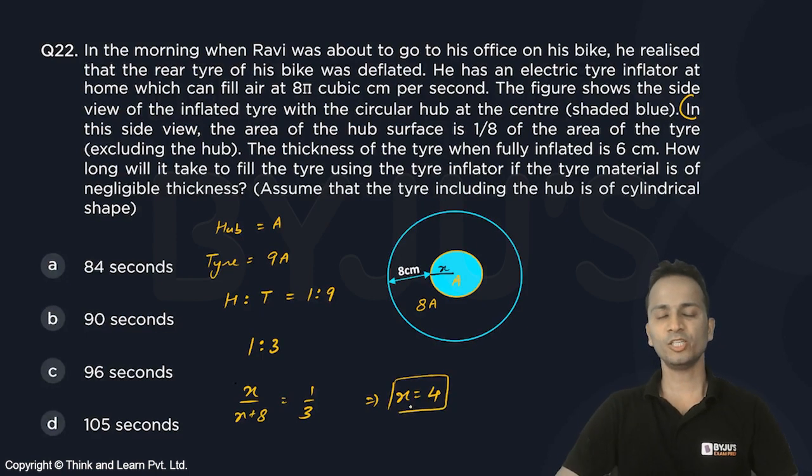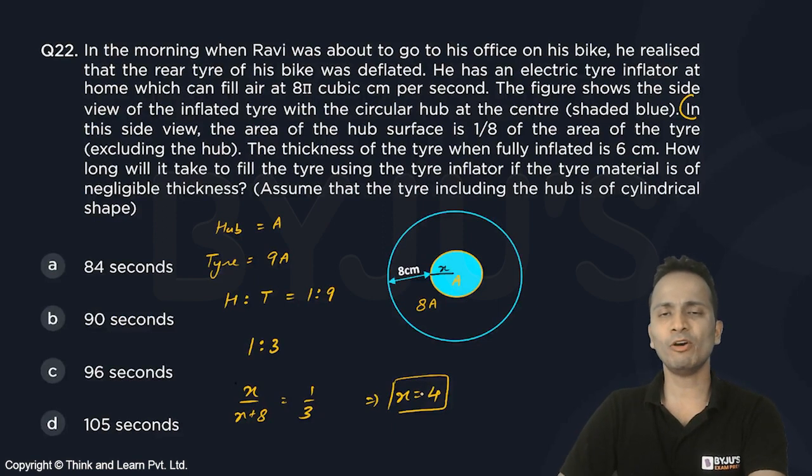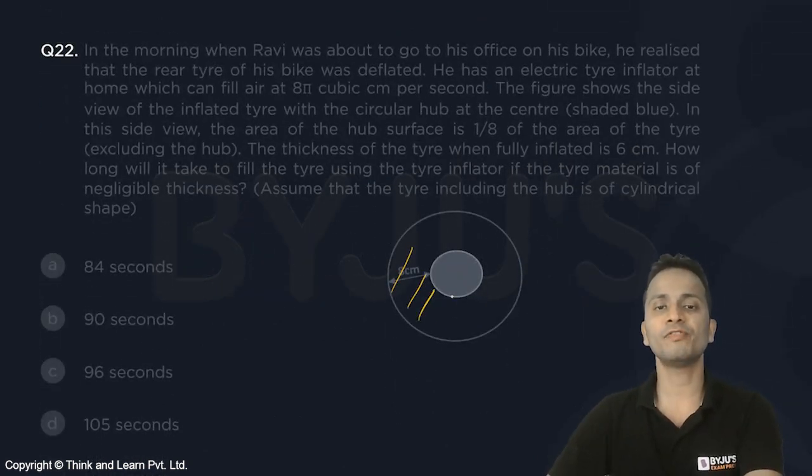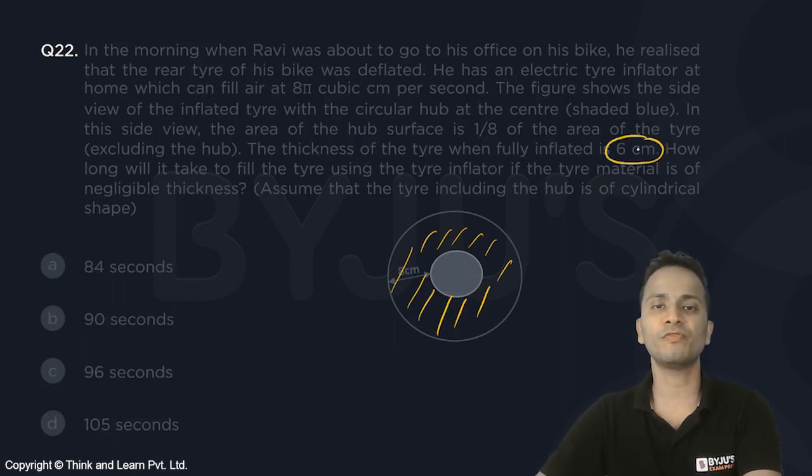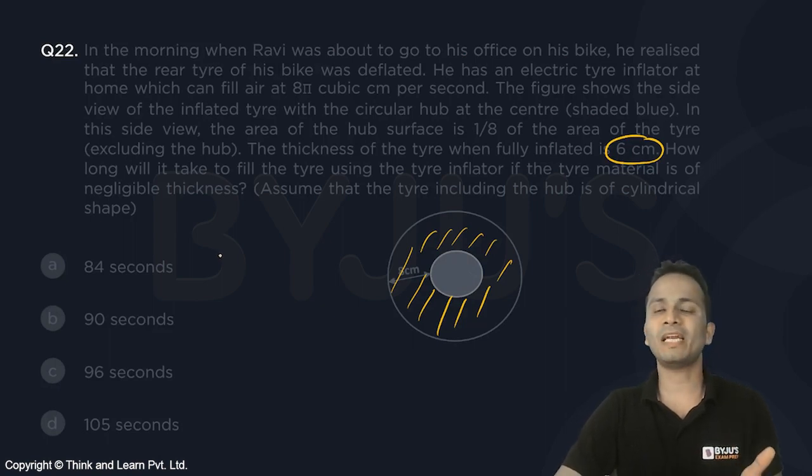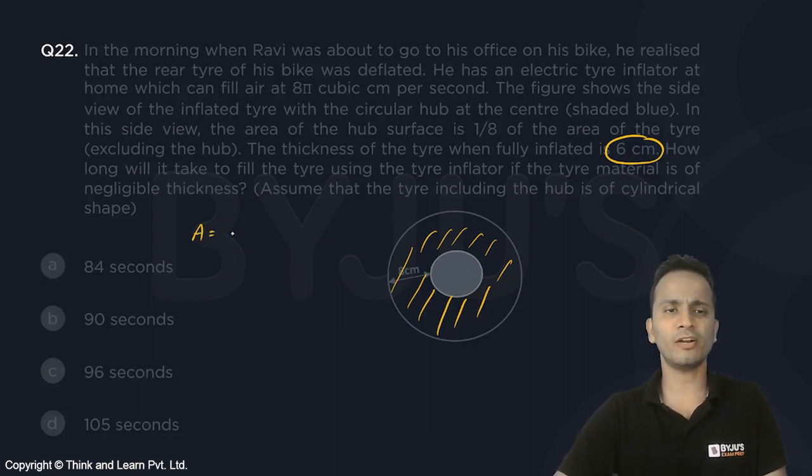So the radius of this hub portion is equal to 4. Now let's calculate the volume of the tire. Volume of the tire will be the area of this portion multiplied by the thickness of the tire when it is completely inflated. Area of this portion will be outer circle minus inner circle, then volume will be multiplied by the thickness, that is 6.